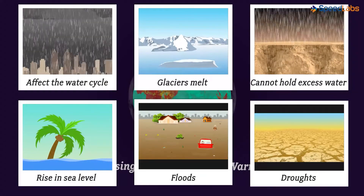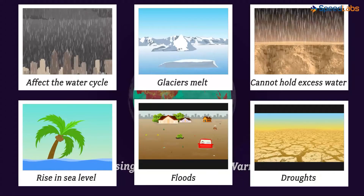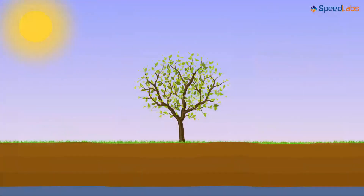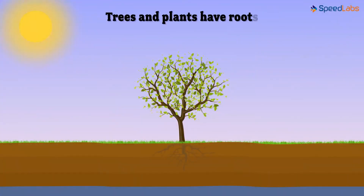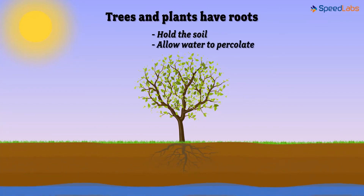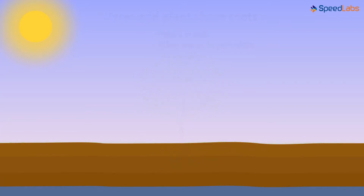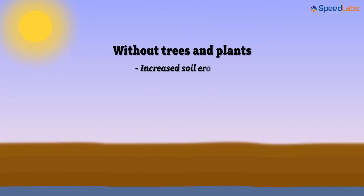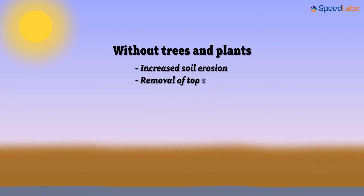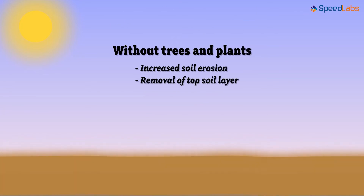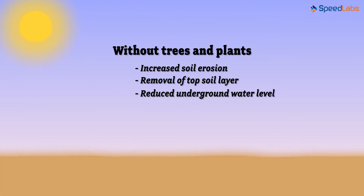Let us see how the water table is affected due to deforestation. Trees and plants have roots which hold the soil and allow water to percolate into it. With trees around, water does not run off carrying away the topsoil. The absence of trees causes increased soil erosion, removal of the topsoil layer, and reduced underground water levels.